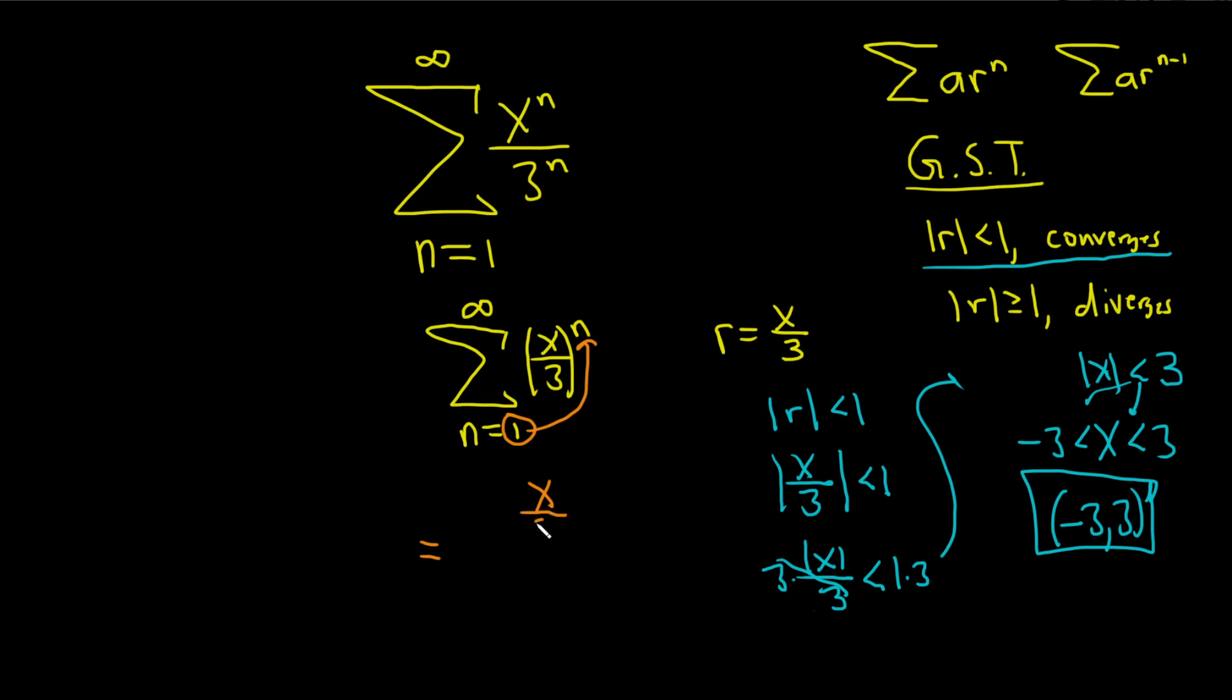And you just write that down. x over 3, so to the first power. And then you divide by 1 minus r, always. So you plug in the number, divide by 1 minus r. Plug in the number, divide by 1 minus r. So it's 1 minus x over 3.